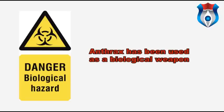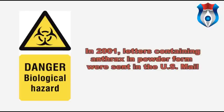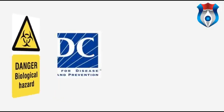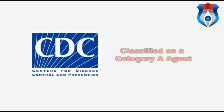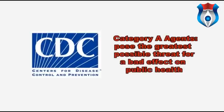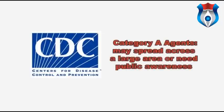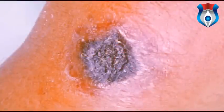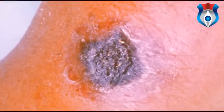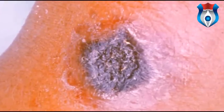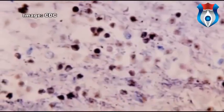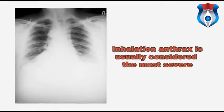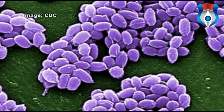Anthrax has also been used as a biological weapon. This happened in the United States in 2001 when anthrax was deliberately spread through the postal system — letters containing anthrax in powder form caused 22 anthrax infections. Anthrax is classified as a Category A agent by the CDC. Category A agents pose the greatest possible threat to public health, may spread across a large area, and require a great deal of planning to protect the public's health. Early treatment with antibiotics can cure cutaneous anthrax; even if untreated, 80% of people infected with cutaneous anthrax do not die. Gastrointestinal anthrax is more serious, with between one-fourth and more than half of cases leading to death. Inhalation anthrax is much more severe — in the 2001 postal scare, about half of inhalation anthrax cases ended in death.